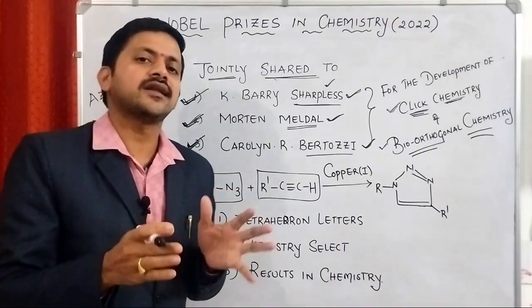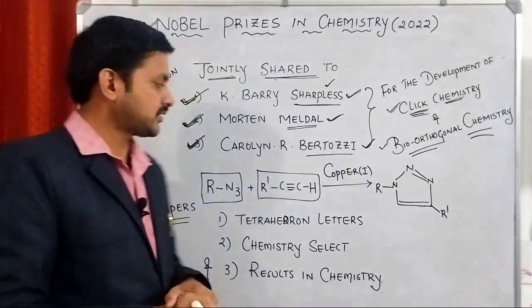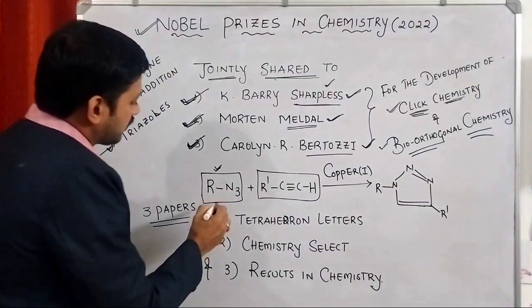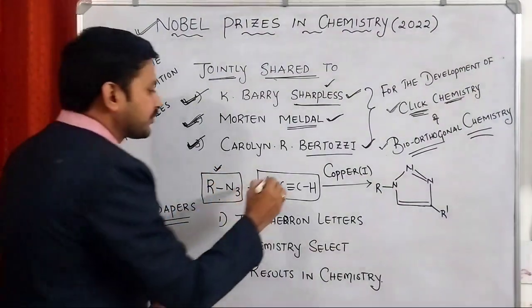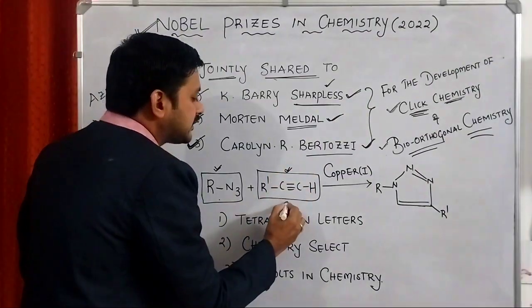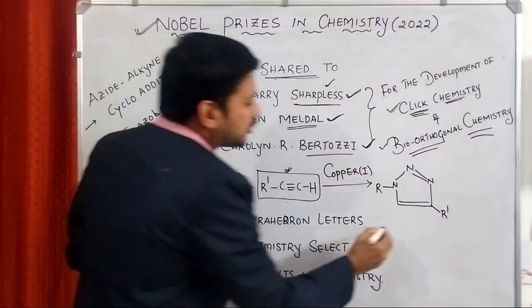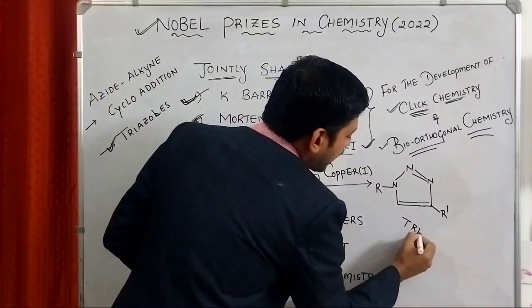If you see the general equation of the click reaction, in the general equation, what we are observing? Azide plus alkyne, this is terminal alkyne, combined together to produce triazoles.